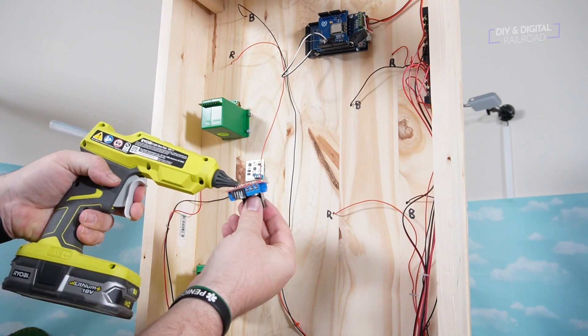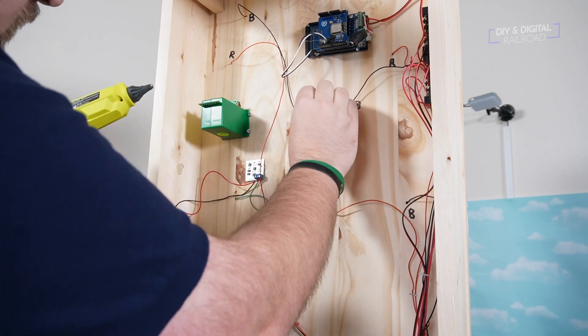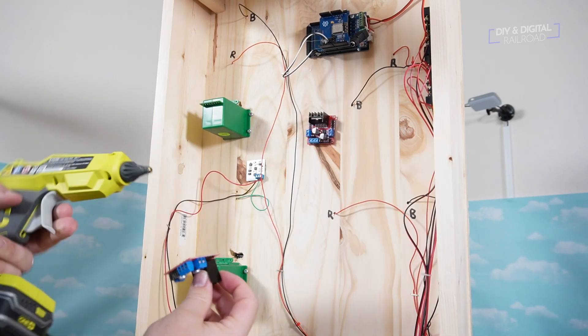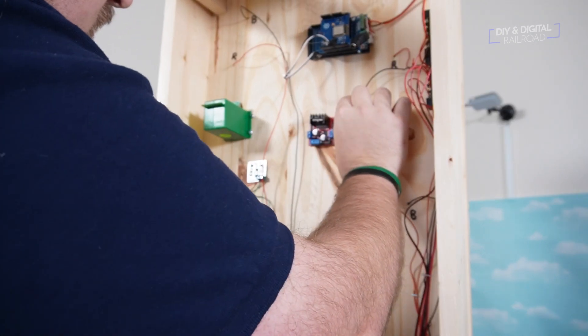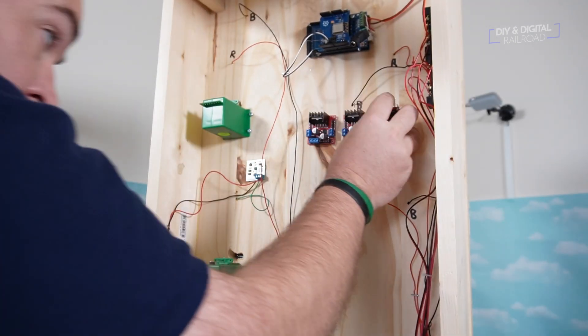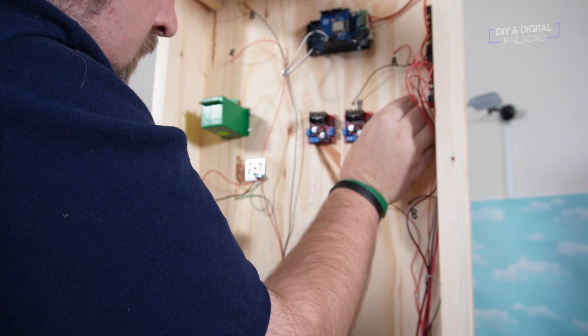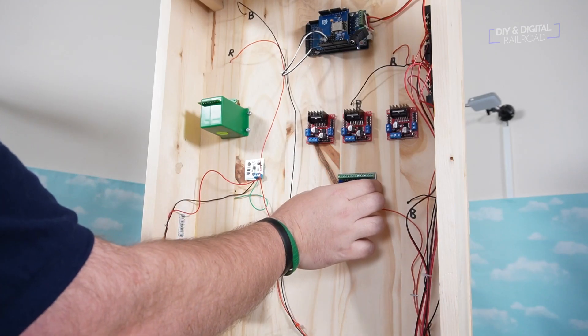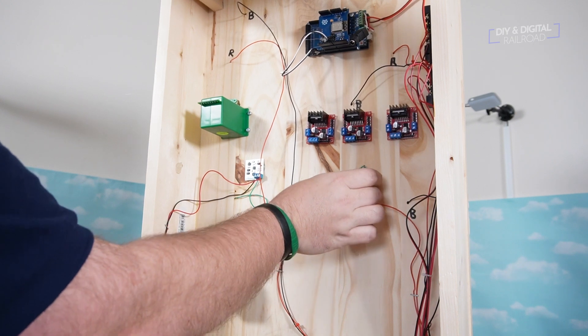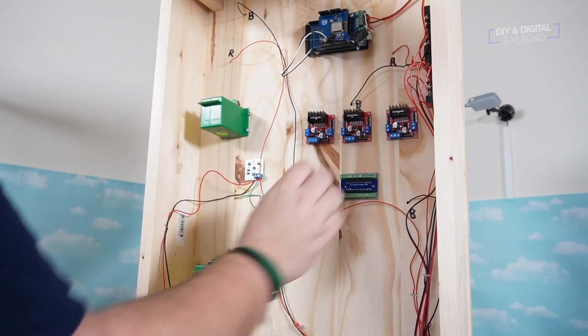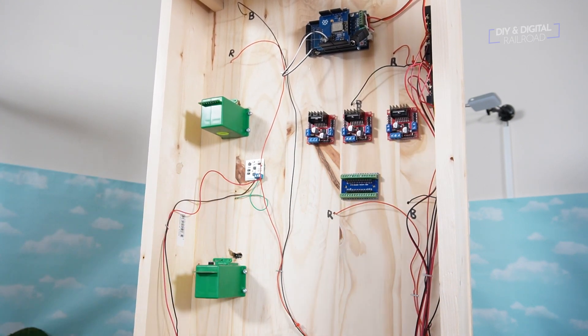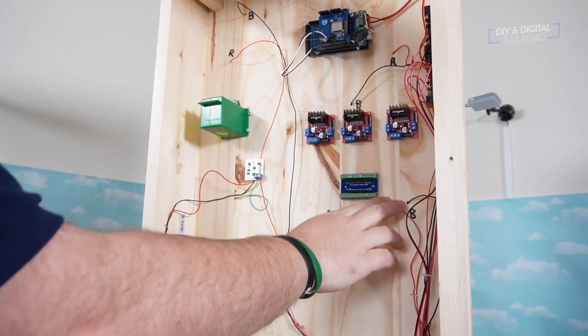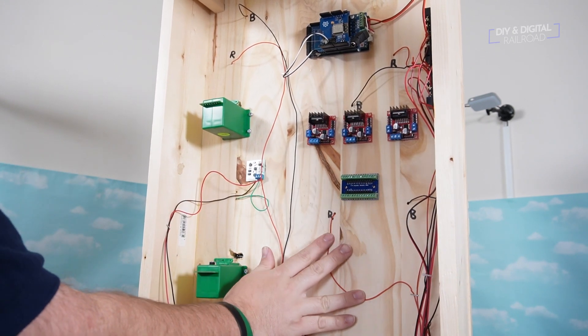First things first, we need to attach some electronics and I'm using my tried and true method of just some simple hot glue to attach the three motor drivers that I will need. Again, all the parts are going to be linked in the description below. Next I go ahead and attach the Arduino nano shield. I'm using an Arduino nano to control all of the turnouts and this nano shield puts these terminal connections in there making it easy to wire up.